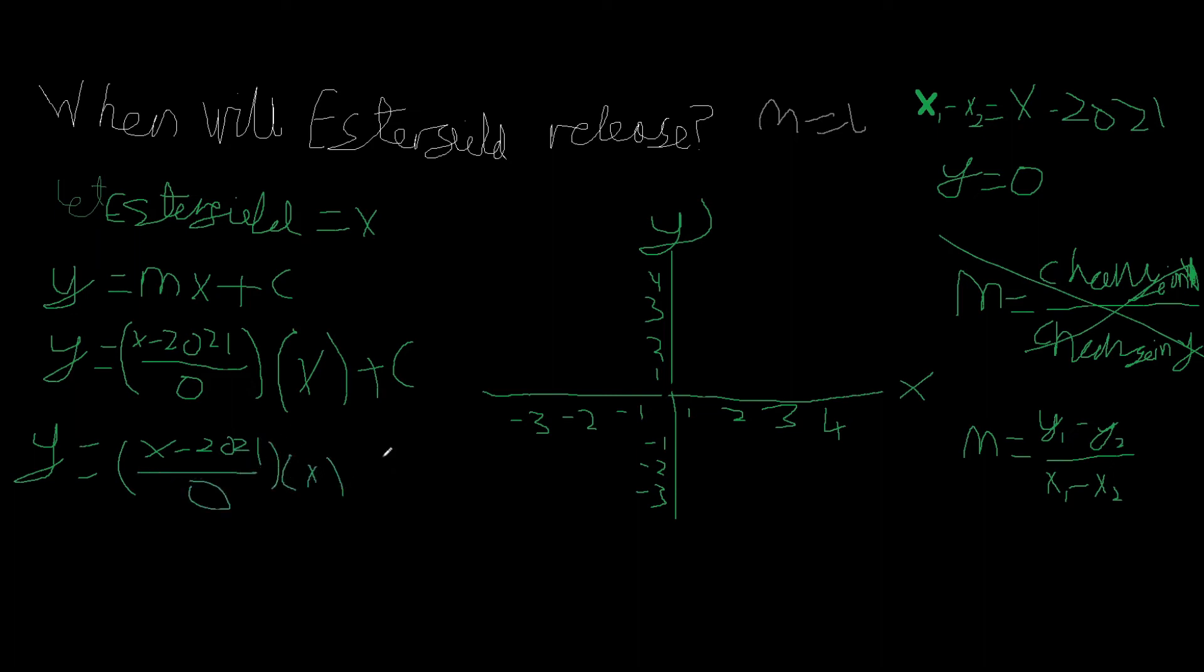X is our answer. We know that we can now get rid of the y and we can just start formulating down because we know that y is zero. So x negative 2021 over zero times x. Let's implement x into the actual equation. We can get x squared negative x times 2021 over zero.